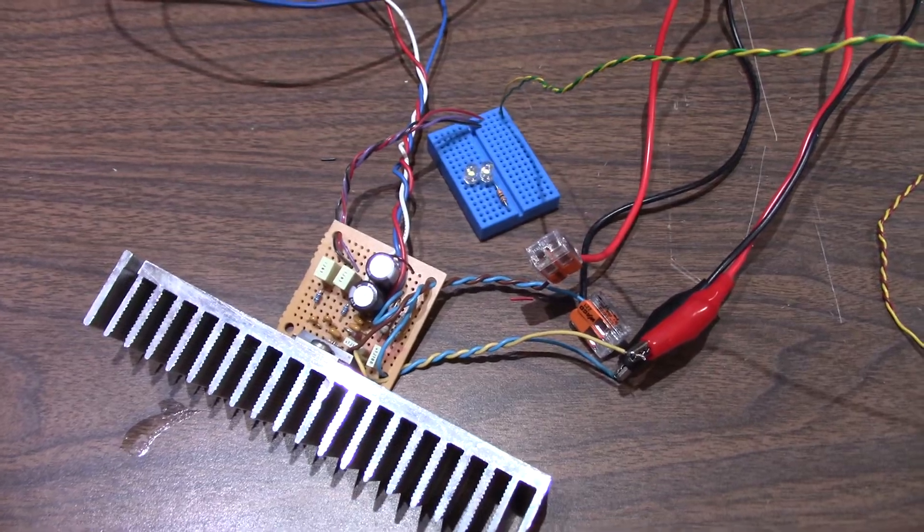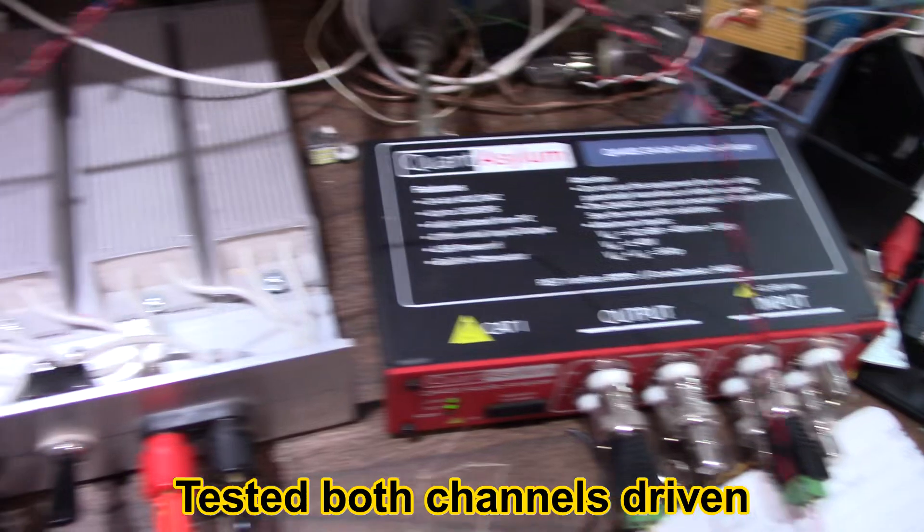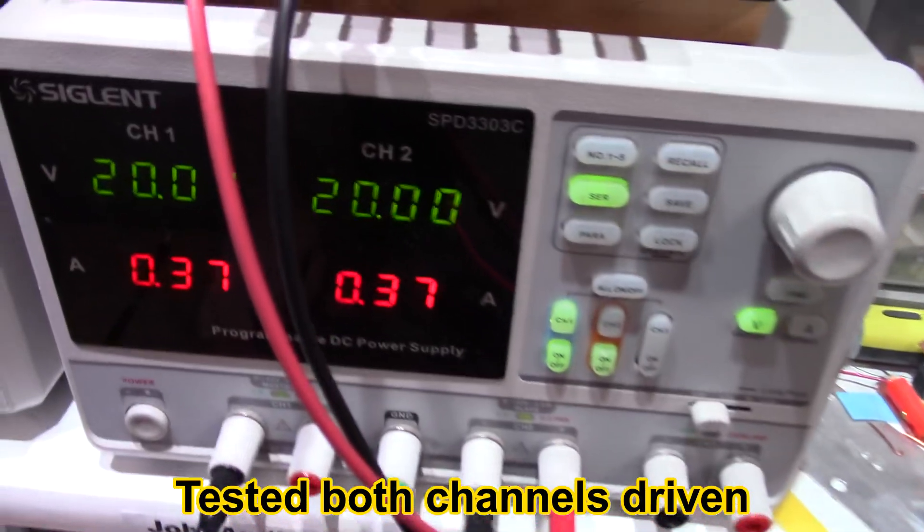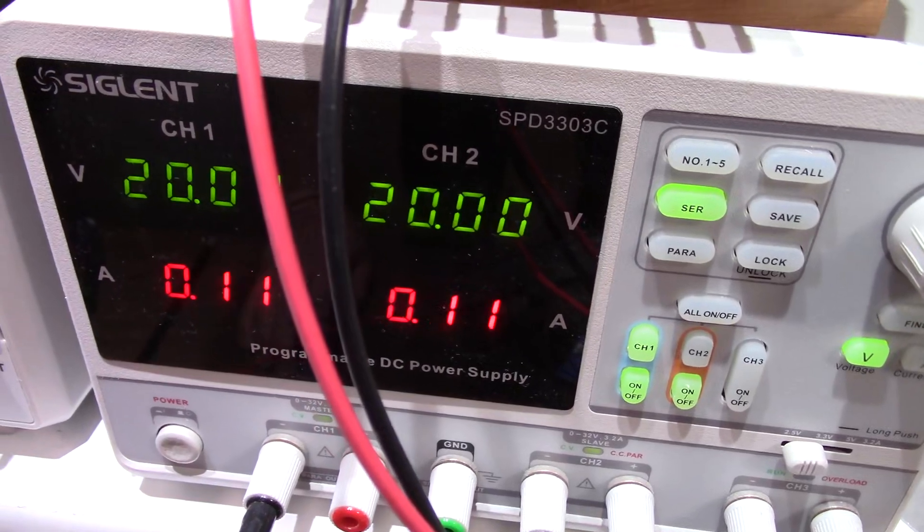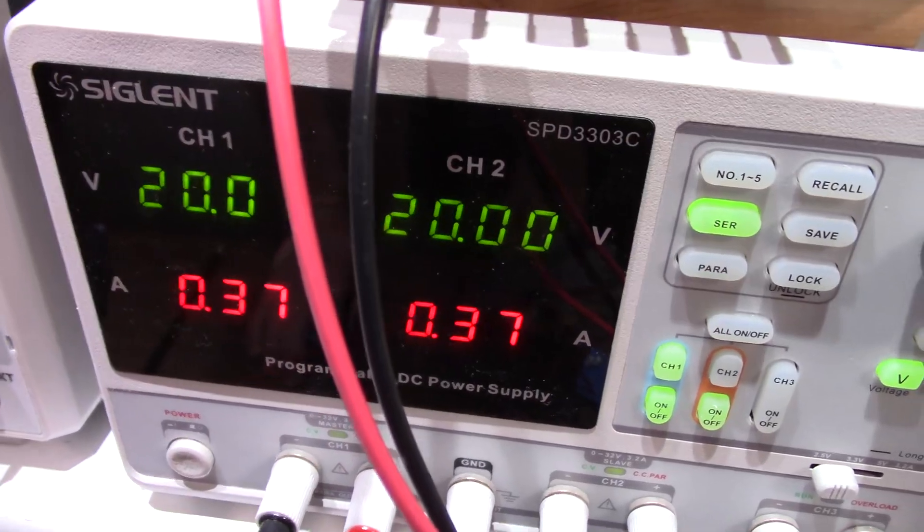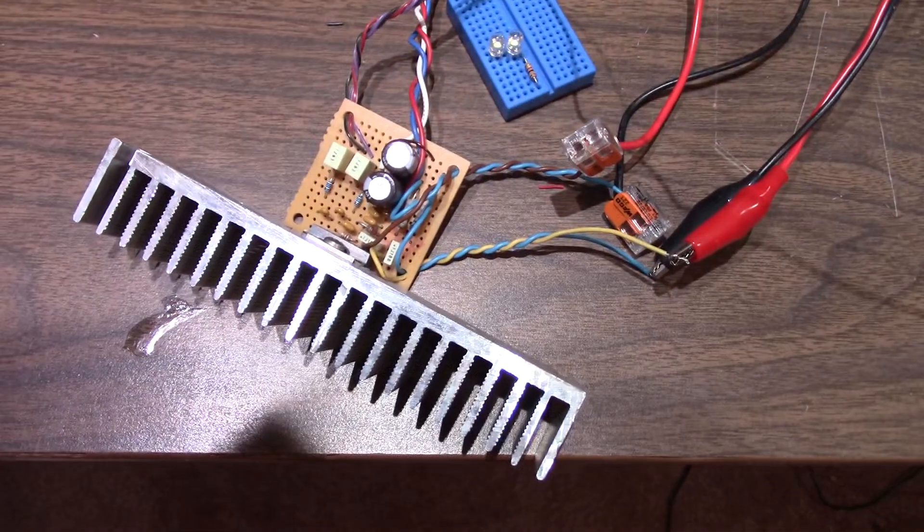It's all hooked up, got the heat sink on there, non-inductive load connected to the Quantum Asylum. From the power supply I'll be operating it at 40 volts, plus and minus 20 volts, down into the cap bank there into the amplifier.